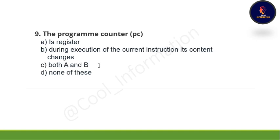Ninth question: The program counter (PC) — option A, is a register; option B, during execution of the current instruction its contents change; option C, both A and B are correct; option D, none of the above. The correct option is option C, which is both A and B.